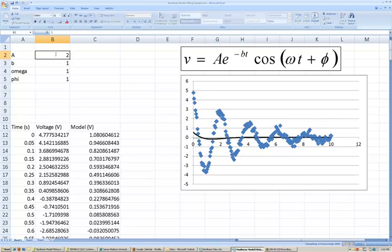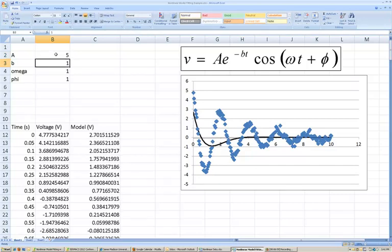But we can use these parameters and sort of adjust them to determine what happens to the model. So, as I adjust parameter A, you can see what happens to the model, the black line, as I do that. Alright, and you can see that we are starting to raise the amplitude at the zero point when I change A.